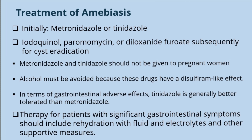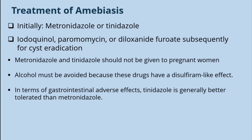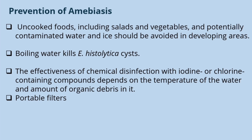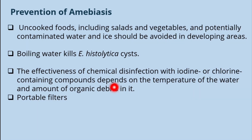We can actually prevent amoebiasis. Uncooked foods including salads, vegetables, and potentially contaminated water and ice should be avoided, especially in developing areas with poor sanitation. Boiling water kills Entamoeba histolytica cysts. The effectiveness of chemical disinfection with iodine or chlorine-containing compounds depends on the temperature of the water and the amount of organic debris in it. Portable water filters can also be used.